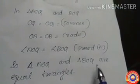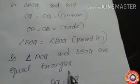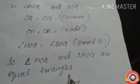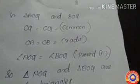This shows that triangles AOQ and BOQ are congruent. By the CPCT rule, we can write AQ equals BQ. Hence the proof.